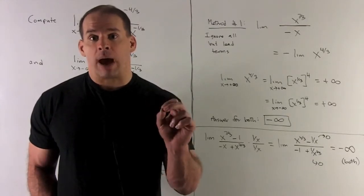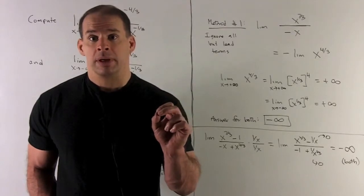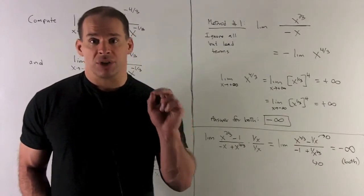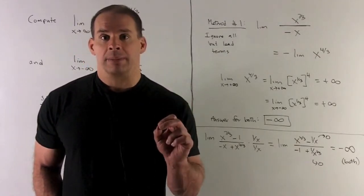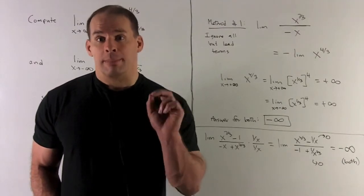But we're going to take a fourth power, so that changes that minus sign to a plus. So again, we have a plus infinity, but the minus out in front is going to change it to minus infinity. So both limits are going to go to minus infinity.